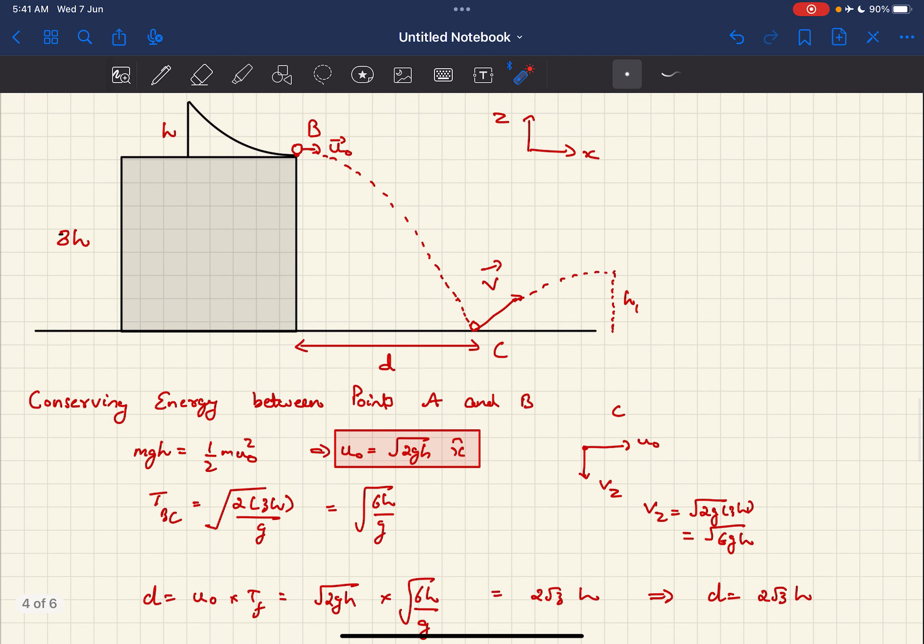And now we can find D, which is the range of this projectile, as U0 times the time of flight. Speed into time. So the U0 we just calculated to be √(2GH), and the time of flight is √(6H/G), which comes out to be 2√3 times H. So we get this relation: D equals 2√3H.